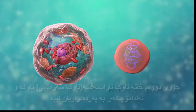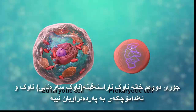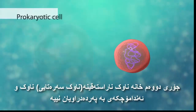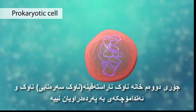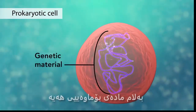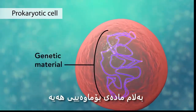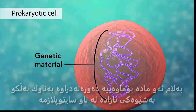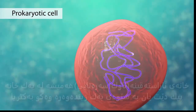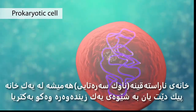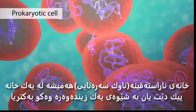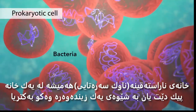The second category is prokaryotic cells. They don't have a nucleus or membrane-enclosed organelles. They do have genetic material, but it's not contained within a nucleus. Prokaryotic cells are always one-celled or unicellular organisms, such as bacteria.